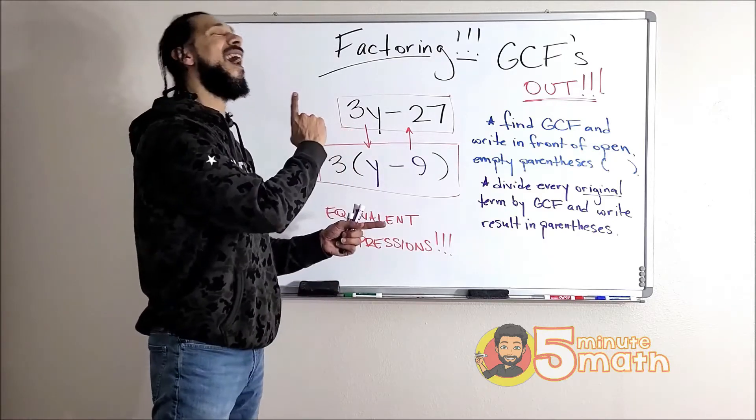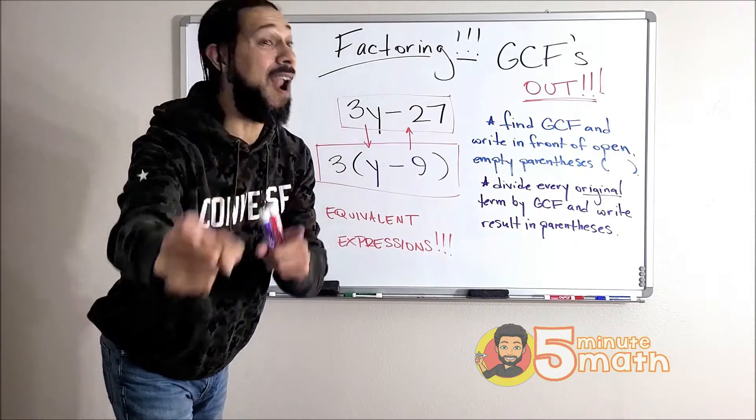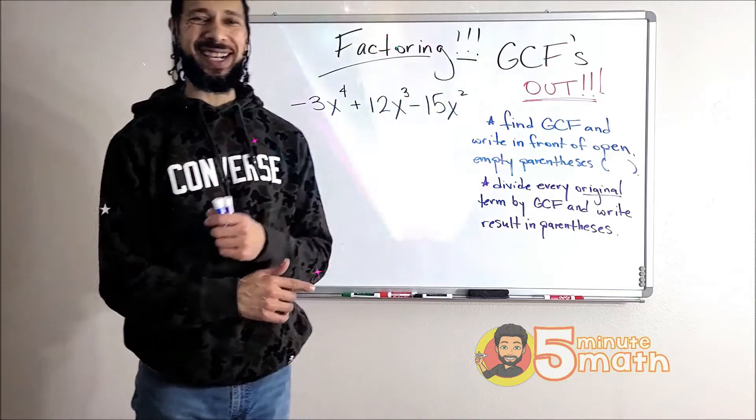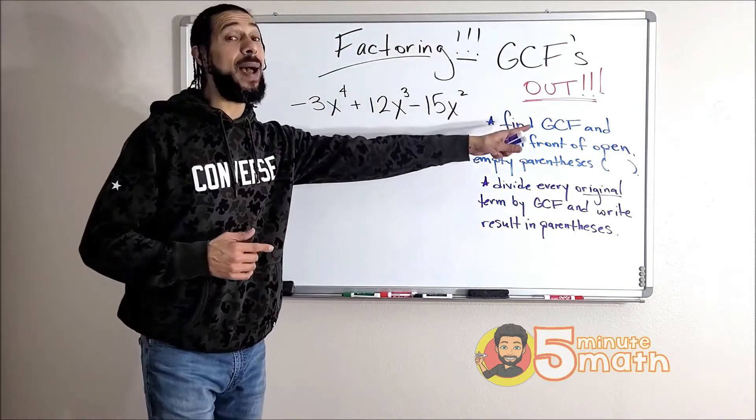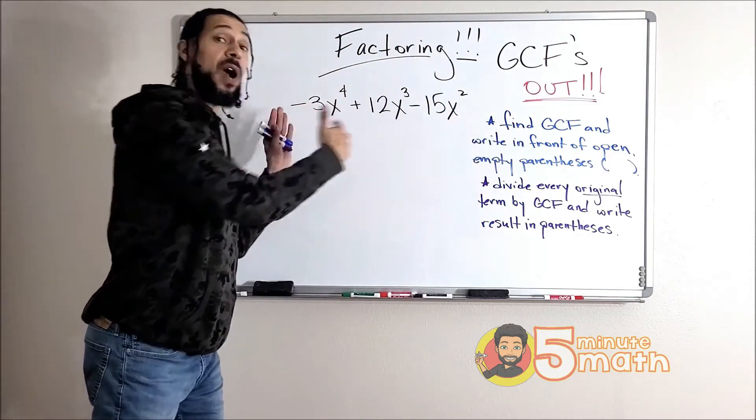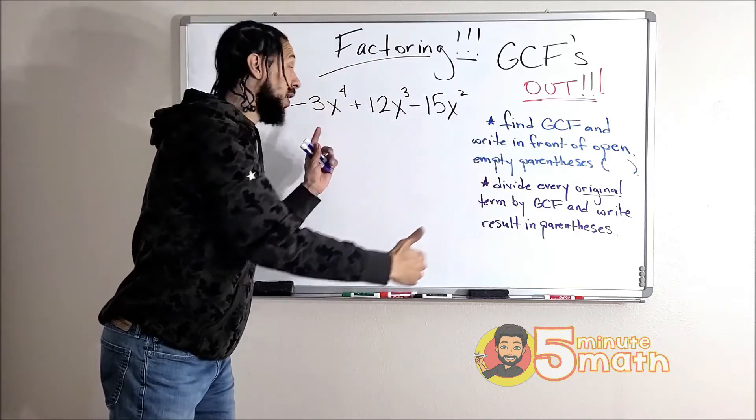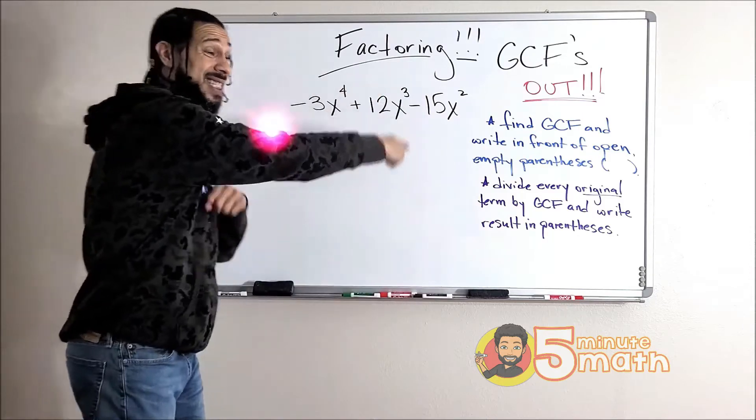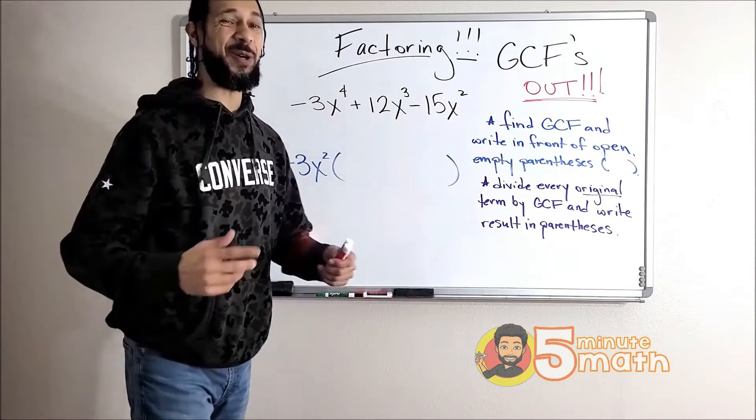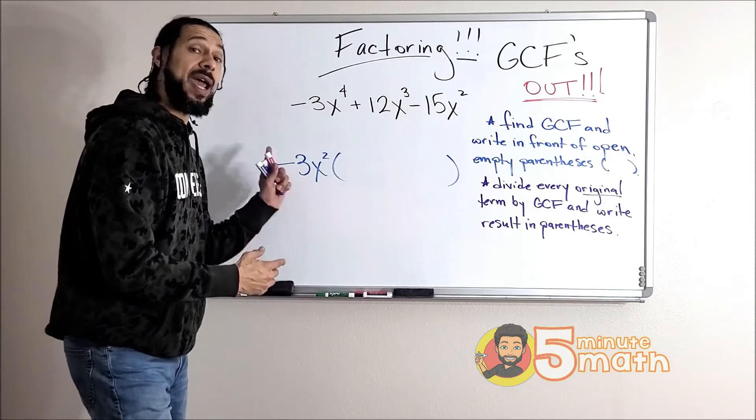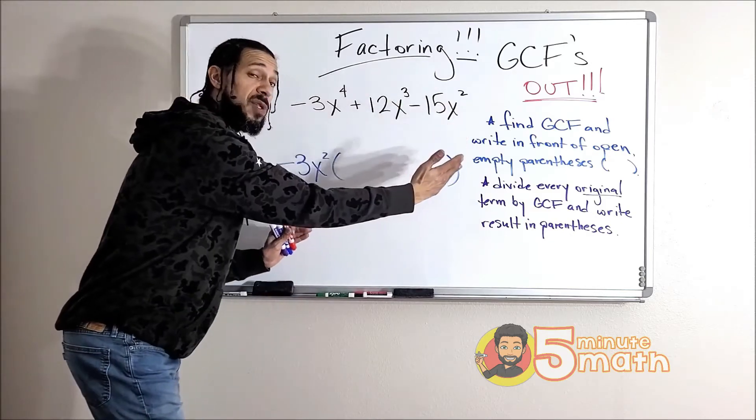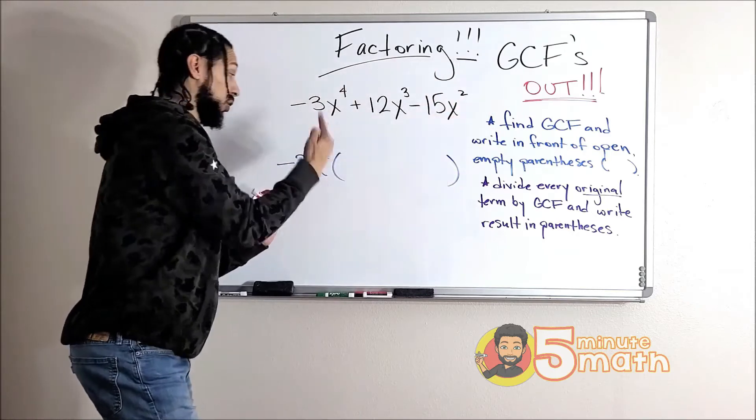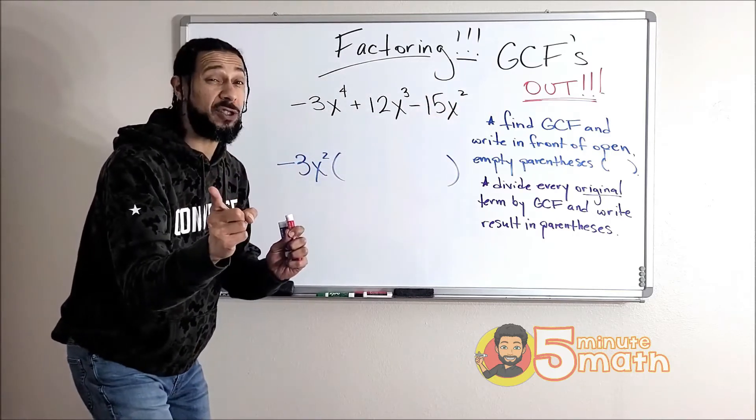Let's do a better one. This is more like it, now we're getting somewhere. First step, find the GCF. Now we got three terms, we're finding the GCF for all three. I got coefficients and variables. You might have found the GCF to be 3x². I can divide all of those numbers by three. The lowest exponent of my common variable is two, but one more rule we got to talk about.